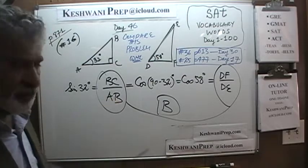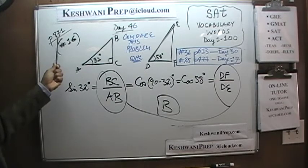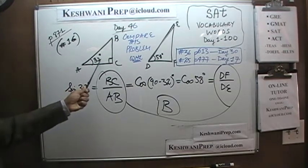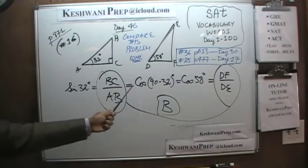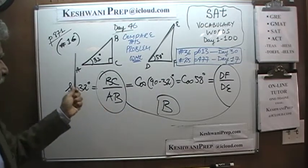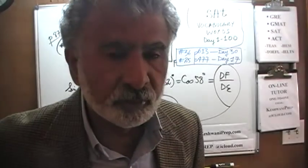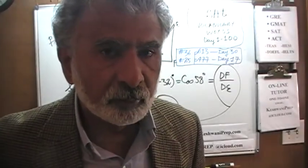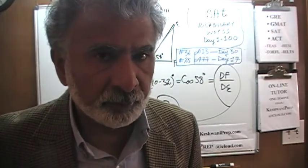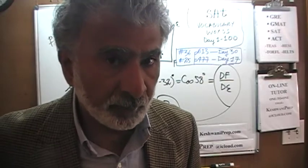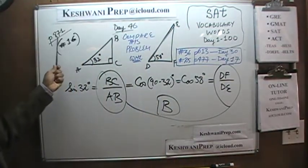On the blackboard what you see here is what we did yesterday — problem number 16 that appears on page 871. This was a problem that deals with the concept of sine of x equals cosine of 90 minus x. Towards the end of that video I was going to share two more similar examples, but I forgot. So I am going to tell you right now about problem number 16 on page 871 one more time.